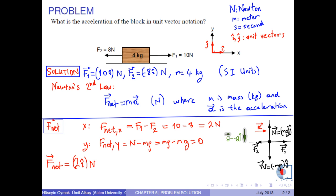And from the Newton's second law, we have a equals f net over m. With the corresponding values, we get 0.5 i hat meters per second squared.